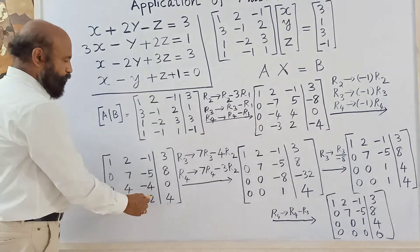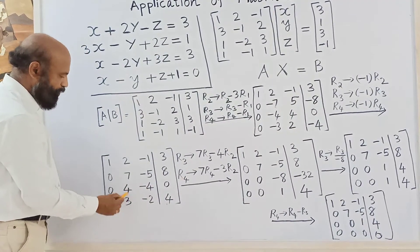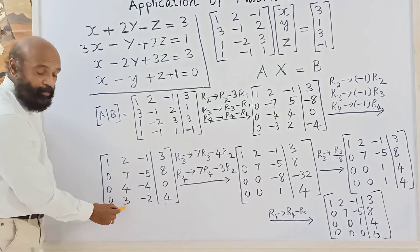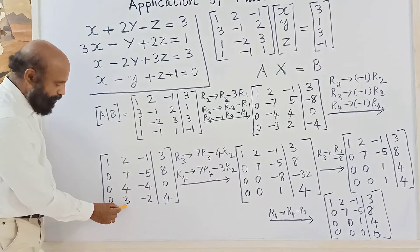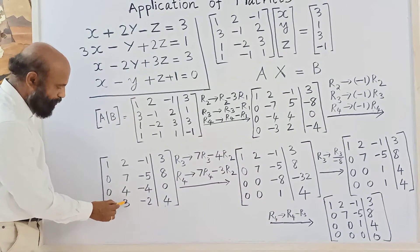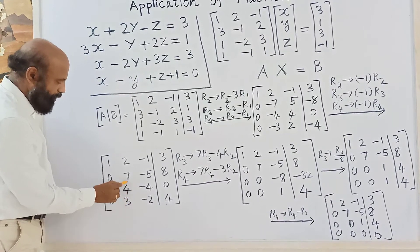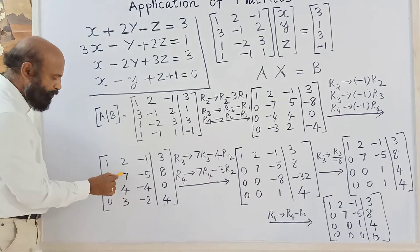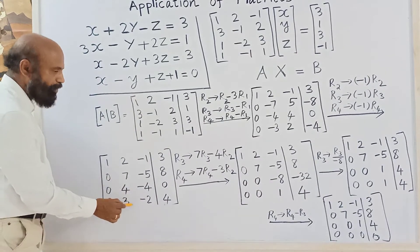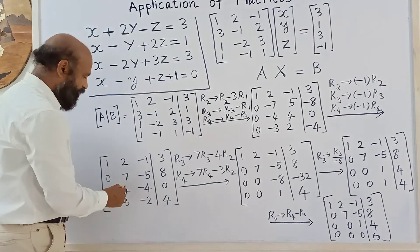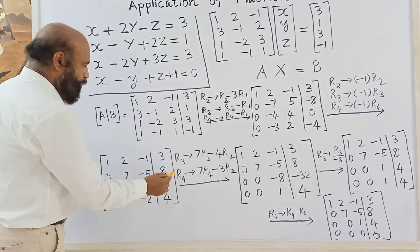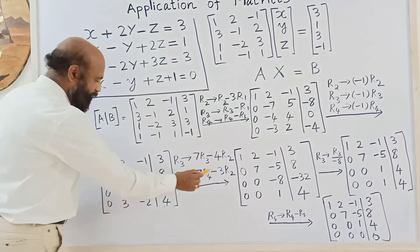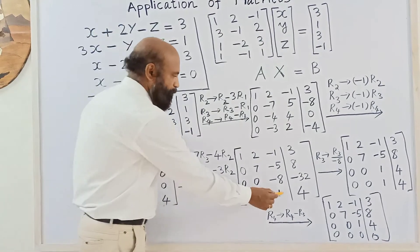Similarly, to zero out the fourth row's entry below the 7 pivot, since the fourth row has entry 3 and the second row has 7, we multiply the fourth row by 7 and the second row by 3, giving 3×7 = 21 and 7×3 = 21, so 21 - 21 = 0. We apply this operation to all elements of the fourth row and third row accordingly.